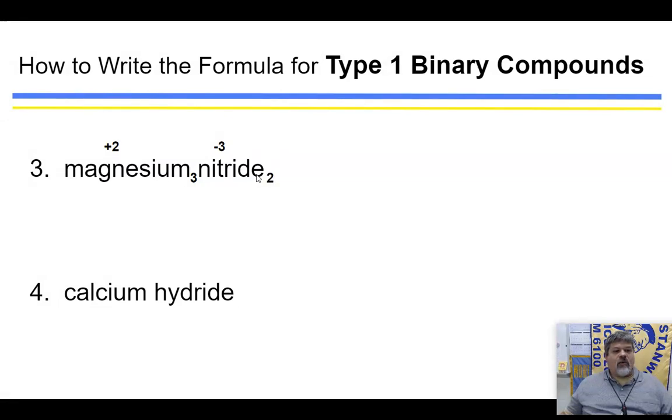Now we can figure out that we make sure that we have our charges canceling each other out. So a plus two times three equals plus six. Negative three times two equals a negative six. So they do cancel each other out. So all we have to do is put down our symbol with a subscript. So magnesium is going to be Mg3, and nitrogen will be N2. So there's our formula for magnesium nitride.